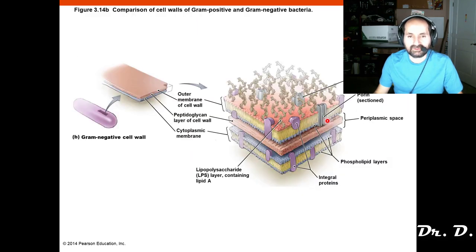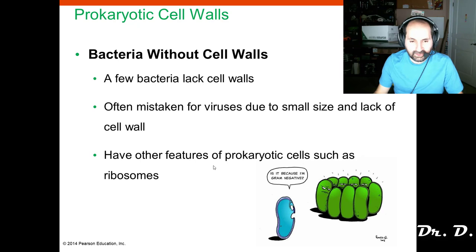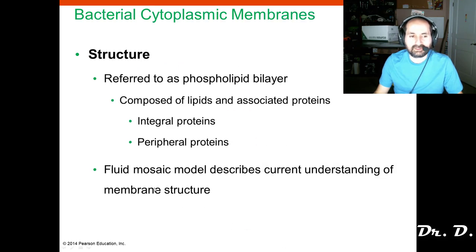You may also want to know that there are porins in the outer membrane which allow larger substances to cross the membrane. Some bacteria don't have a cell wall of peptidoglycan at all — those are called bacteria without cell walls, and they are usually pleomorphic, which means they don't have a particular shape.